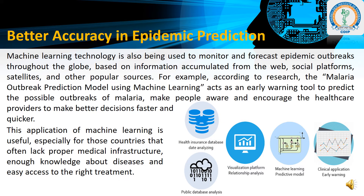The next application is better accuracy in epidemic prediction. Machine learning technology is also being used to monitor and forecast epidemic outbreaks throughout the globe, based on information accumulated from the web, social platforms, satellites and other popular sources. For example, according to research, the malaria outbreak prediction model using machine learning acts as an early warning tool to predict the possible outbreaks of malaria. This application of machine learning is especially useful for countries that often lack proper medical infrastructure, knowledge about the disease and easy access to the right treatment.